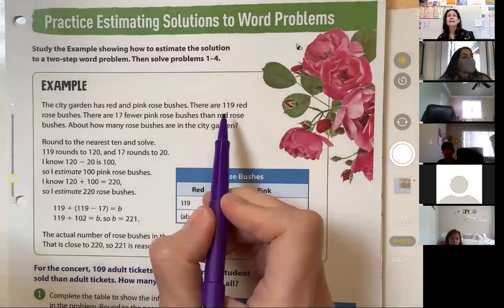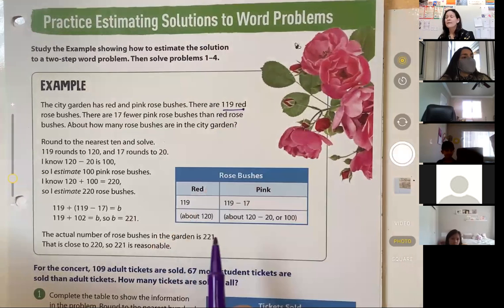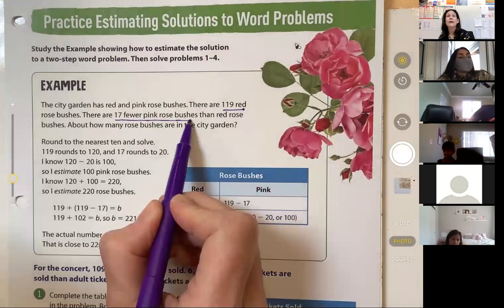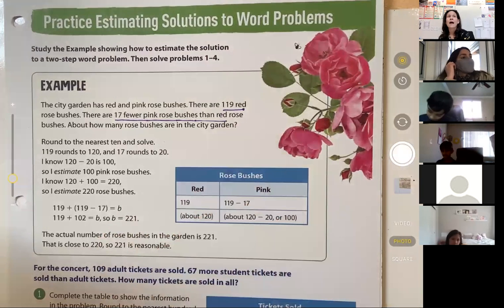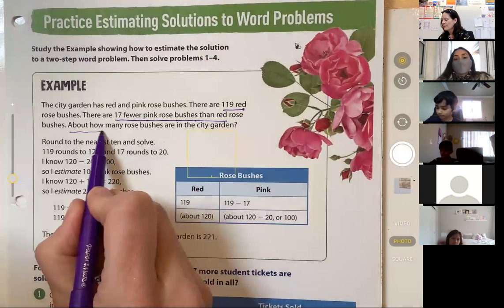There are 119 red, and there are 17 fewer pink rose bushes than red. About how many rose bushes are in the city garden?